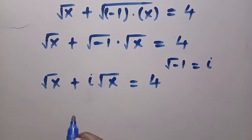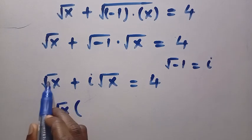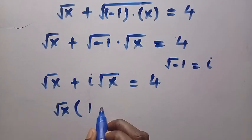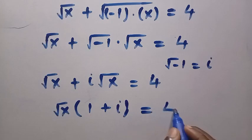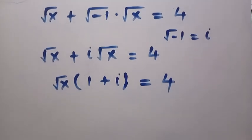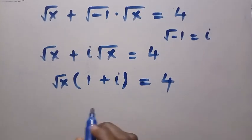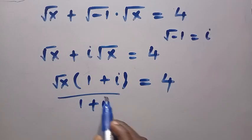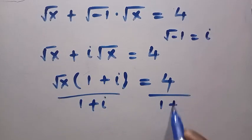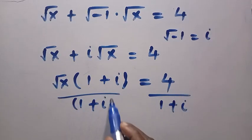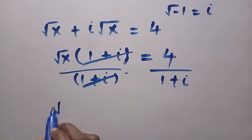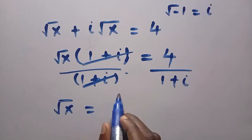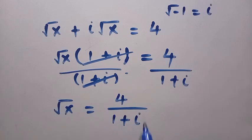Factoring out root x, we get root x times (1 + i) equals 4. Dividing both sides by (1 + i), we have root x equals 4 divided by (1 + i).